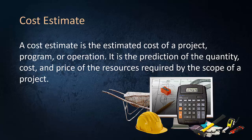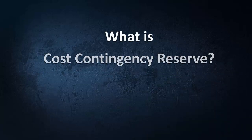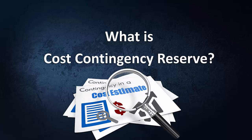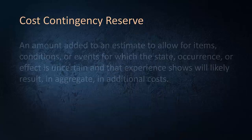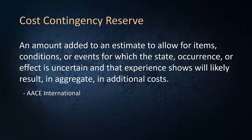So these uncertainties are risks to the project. To account for cost uncertainty, contingency reserve may be added to a cost estimate. The Association for Advancement of Cost Engineering, or AACE International, has defined contingency as an amount that is added to an estimate to allow for uncertain items, conditions, or events that experience shows will likely result in additional costs.